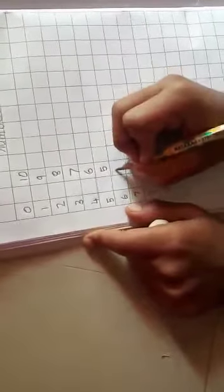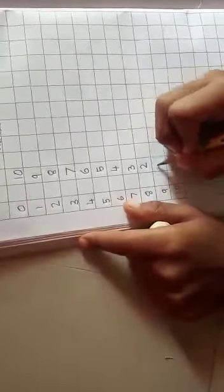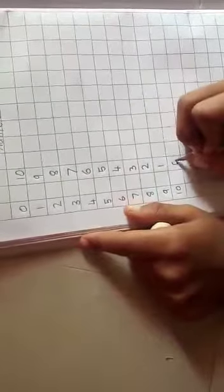And reverse, 10 to 0. 10 here. 9, 8, 7, 6, 5, 4, 3, 2, 1, and 0.